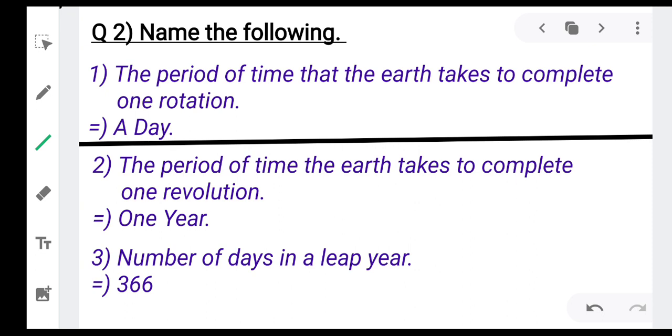Now second one, the period of time the earth takes to complete one revolution. So the answer is one year. And the third one is number of days in a leap year. So the answer is 366.